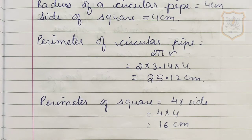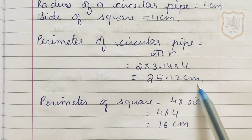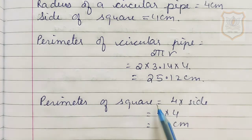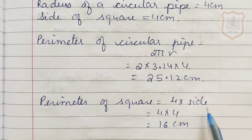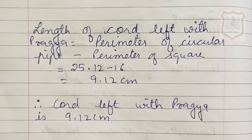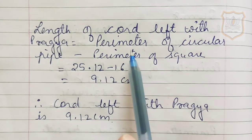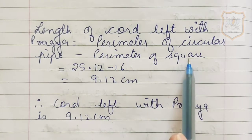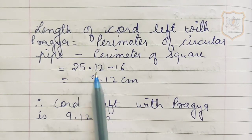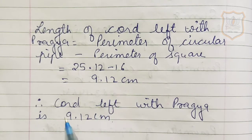The cord of length 25.12 cm she has to wrap on the square box. Perimeter of the square equals 4 times side, which is 4 times 4 equals 16 cm. To find the length of the cord left with Pragya, we subtract: 25.12 minus 16 equals 9.12 cm. Therefore the cord left with Pragya is 9.12 cm.